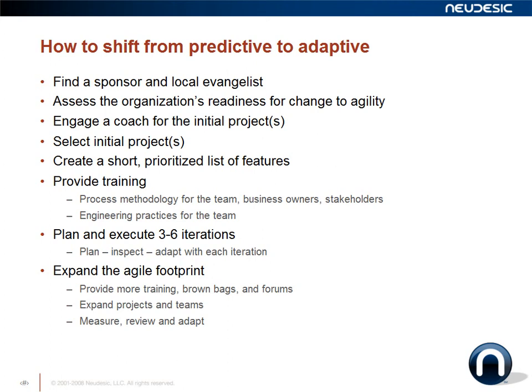There are many grassroots efforts in organizations where development teams have said there's got to be a better way and have started adopting agile practices — some going full board with agile methodologies. Now you're beginning to see more of a shift where organizations are implementing agile practices from the top level on down. It has been fairly successful from a grassroots effort up, and now there's more effort around an organizational approach to changing from predictive to adaptive.